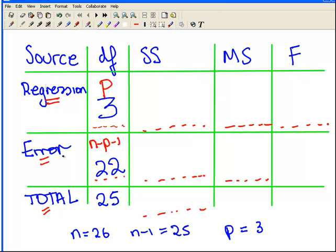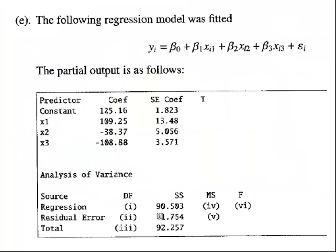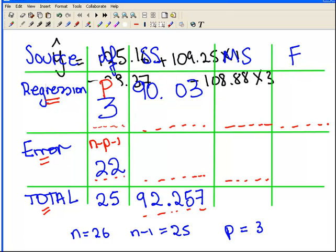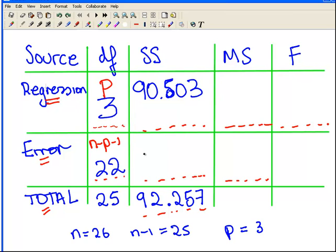Now, the next bit we are given is we are actually given all of the sums of squares values. But let's just say for argument's sake I was only given the regression and the total. The degrees of freedom for regression and error should add up to total. Likewise, the sums of squares. So 90.503, what would bring you up to 92.257? Just a little bit of calculator work, you'll find that the difference there is 1.754.